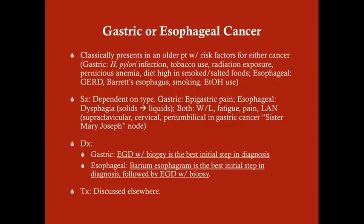Gastric cancer and esophageal cancer — these are two different cancers, and cancer can cause bleeding because of unstable tissue. Both present in older patients with relevant risk factors. Gastric cancer risk factors include established peptic ulcer disease especially H. pylori infection, tobacco use, radiation exposure, pernicious anemia, and a diet high in smoked or salted foods. Esophageal cancer risk factors: for adenocarcinoma, gastroesophageal reflux disease especially Barrett's esophagus; for squamous cell carcinoma, smoking and alcohol use.